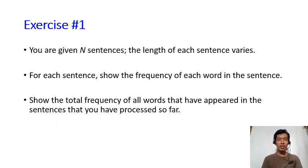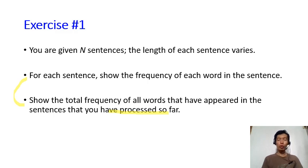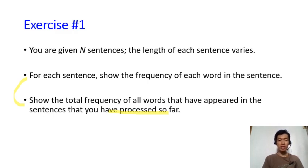There will be two exercises for you to try. In the first exercise, you are given N sentences where the length of each sentence varies. For each sentence, show the frequency of each word in that sentence, then show the total frequency of all words that have appeared in all sentences processed so far. Keep repeating these two processes until you have processed all N sentences. There will be a pause to give you time to create a flowchart showing the algorithm, and I'll return after the pause with the second exercise.